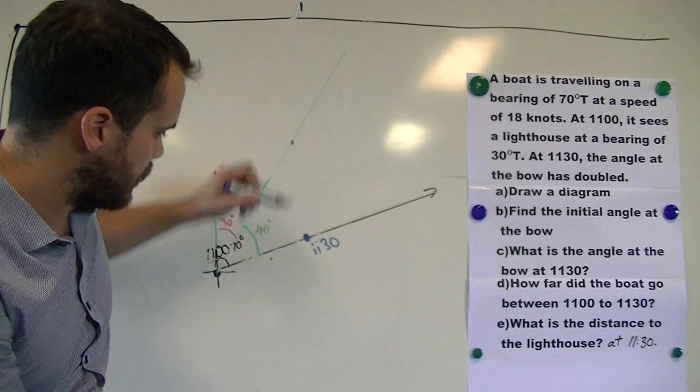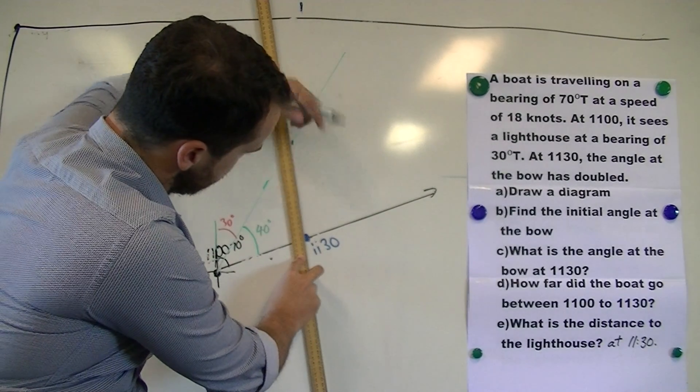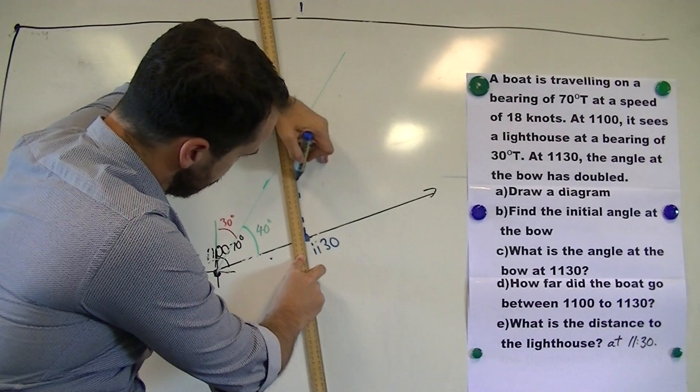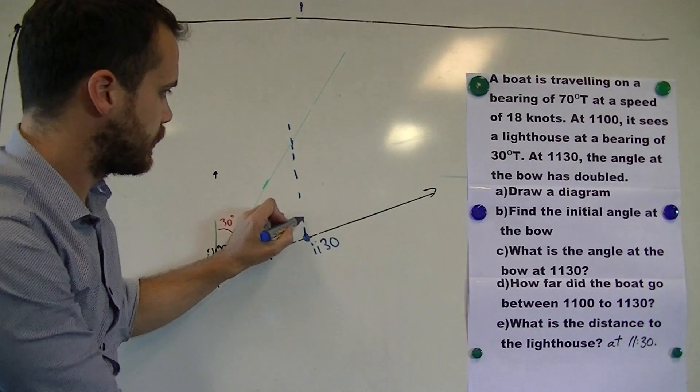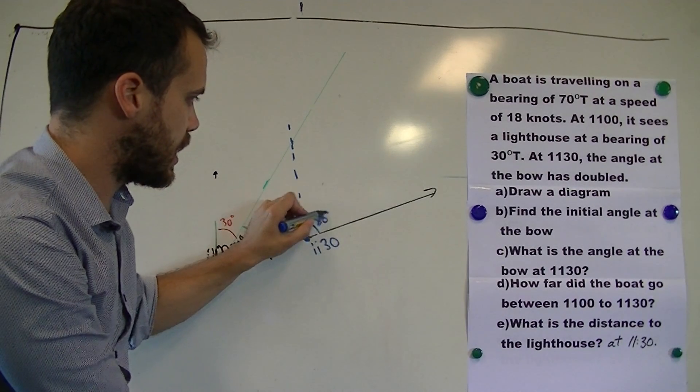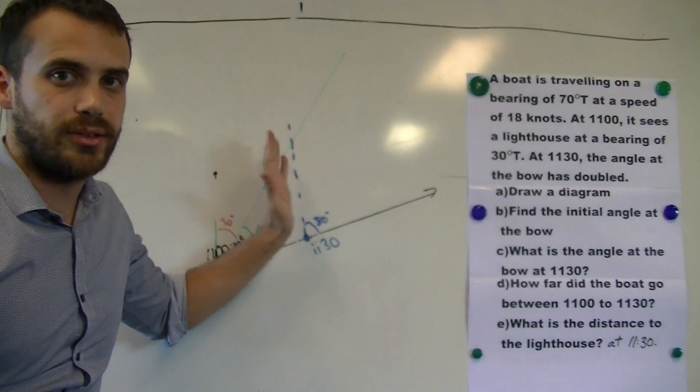Now that means the angle between there and there is 80 degrees. That is our doubled angle at the bow.